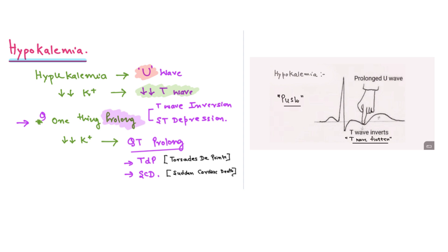First, we will see about potassium and its effect on ECG changes, starting with hypokalemia. In hypokalemia, as the level of potassium goes down, you can correlate: if potassium goes down, T wave also goes down — basically T wave inversion and ST depression. One characteristic finding: if you spell hypo like H-Y-P-U, you can remember that a prominent U wave is seen in hypokalemia. So T wave inversion, ST depression, and prominent U waves are seen in hypokalemia.